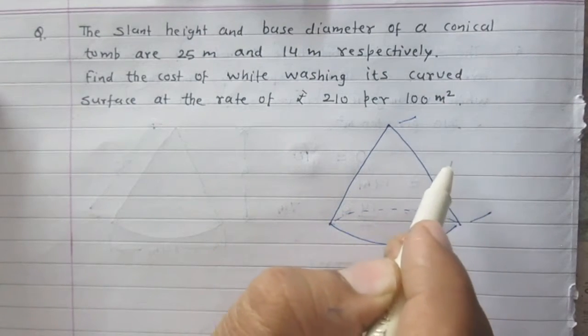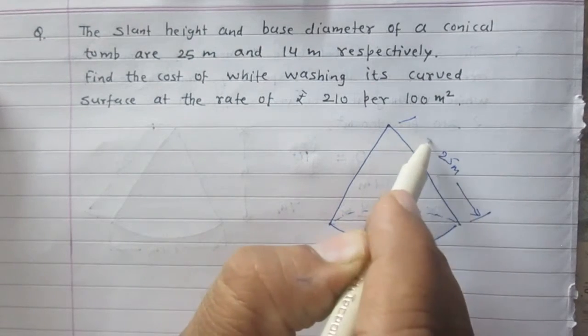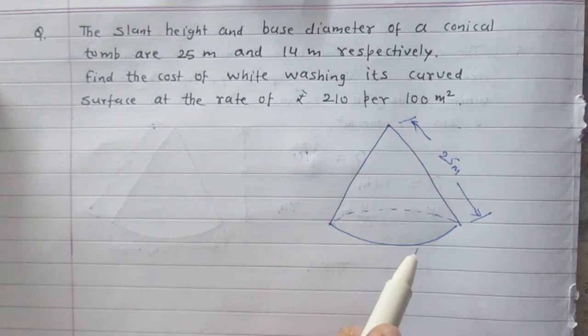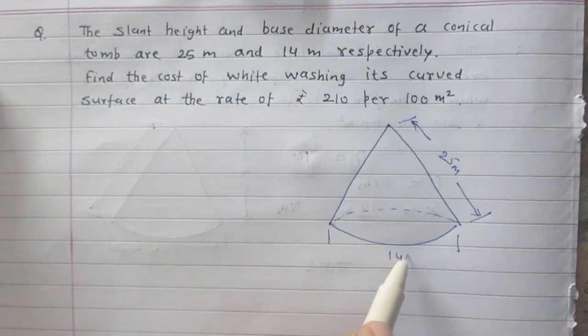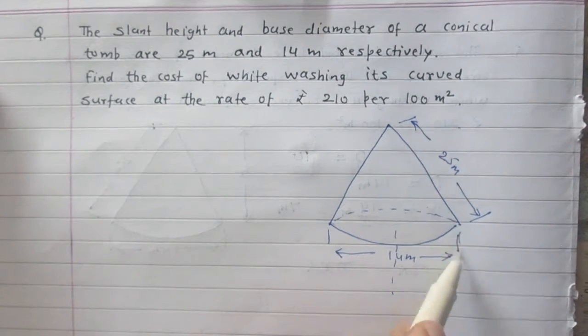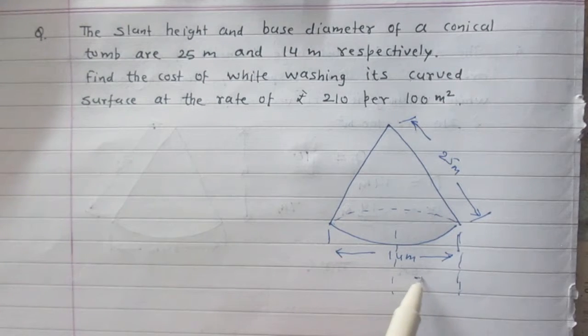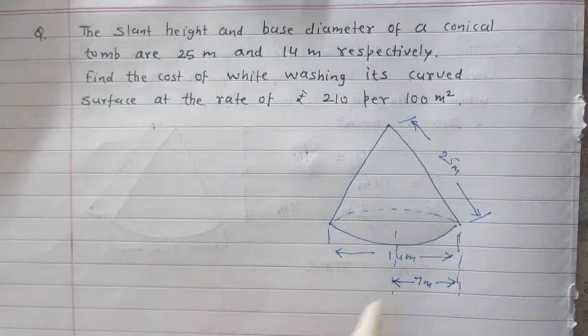Slant height of this conical tomb is 25m. It is given to us and diameter of the base is 14m according to the question. Since diameter is 14m, we can say that radius is half of the diameter, so radius of this conical tomb is 7m.